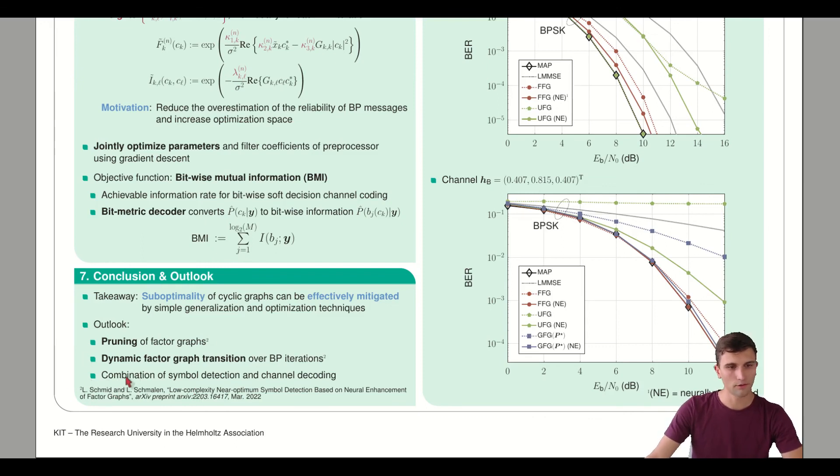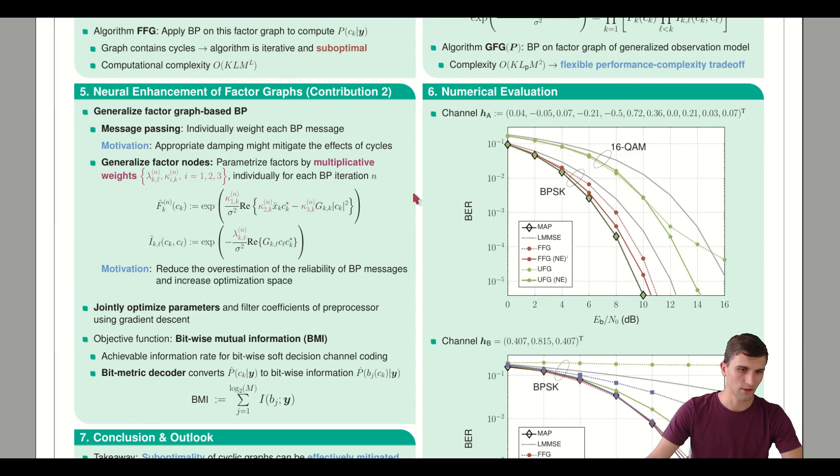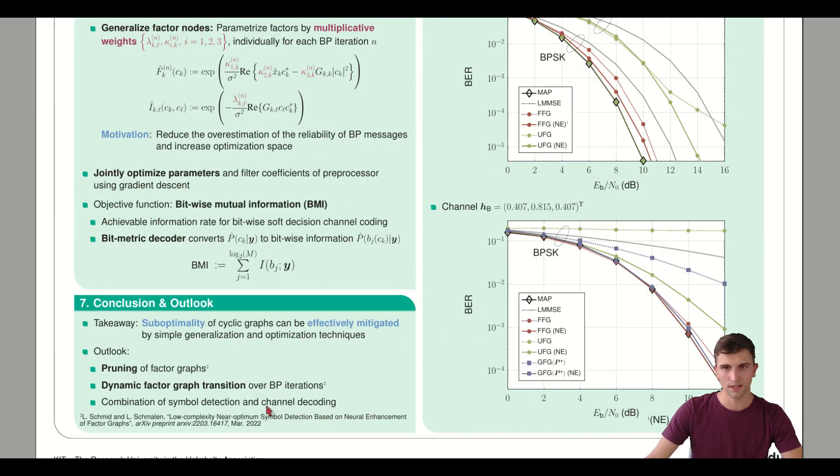As a long term goal, we want to combine the symbol detection with channel decoding. Channel decoding can be done for linear codes with a Tanner graph. Basically we can just dock this Tanner graph with its variable nodes and check nodes to this factor graph for symbol detection and do joint detection and decoding. This is the long term goal once we're finished with examinations on the symbol detection itself.